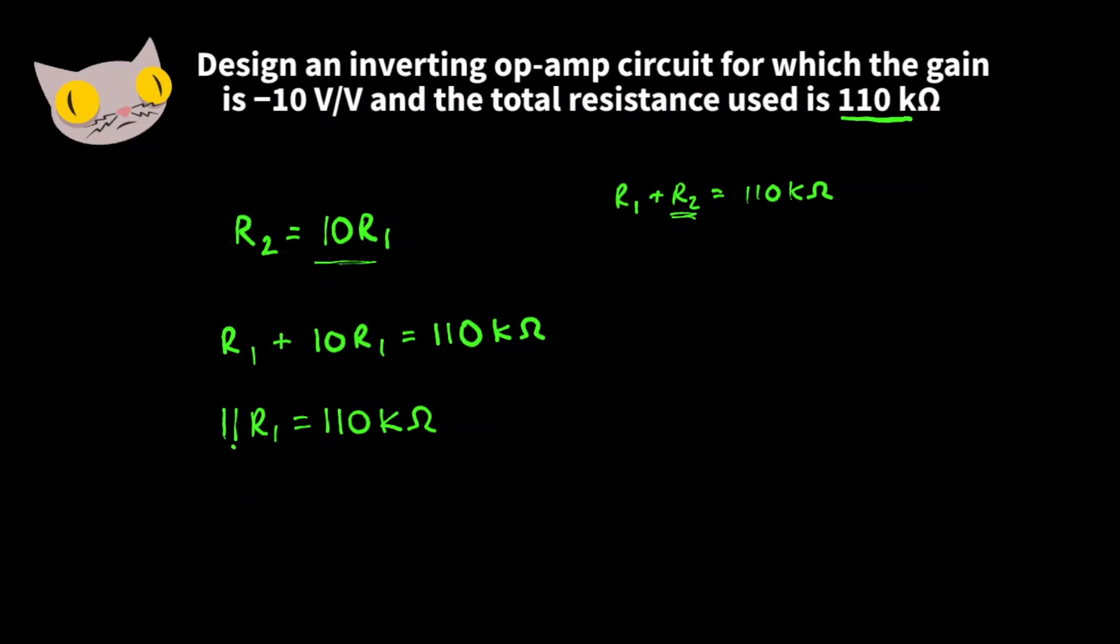Now we have 11R1 is equal to 110,000 ohms. We can find the value for R1 by dividing both sides by 11. So now we see that R1 is equal to 10,000 ohms.